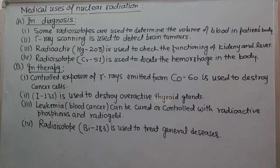Third, radioactive mercury-203 is used to check the functioning of kidney and liver. Fourth, radioisotope chromium-51 is used to locate the hemorrhage in the body. In therapy: number one, controlled exposure of gamma rays emitted from cobalt-60 is used to destroy cancerous cells. Number two, iodine-131 is used to destroy overactive thyroid glands. Number three, leukemia or blood cancer can be cured or controlled with radioactive phosphorus or radio gold. Fourth, radioisotope bismuth-183 is used to treat general diseases.